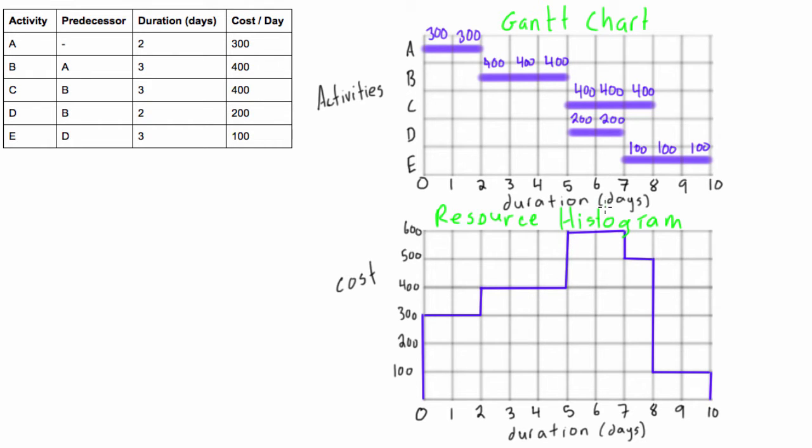So the next thing that we want to do with this information, now that we know how to draw our resource histogram, is we want to know what to do if we're imposed with a resource constraint. So for this example, let's say that someone has told us that we're not allowed, we're not able to spend more than $500 on any given day.